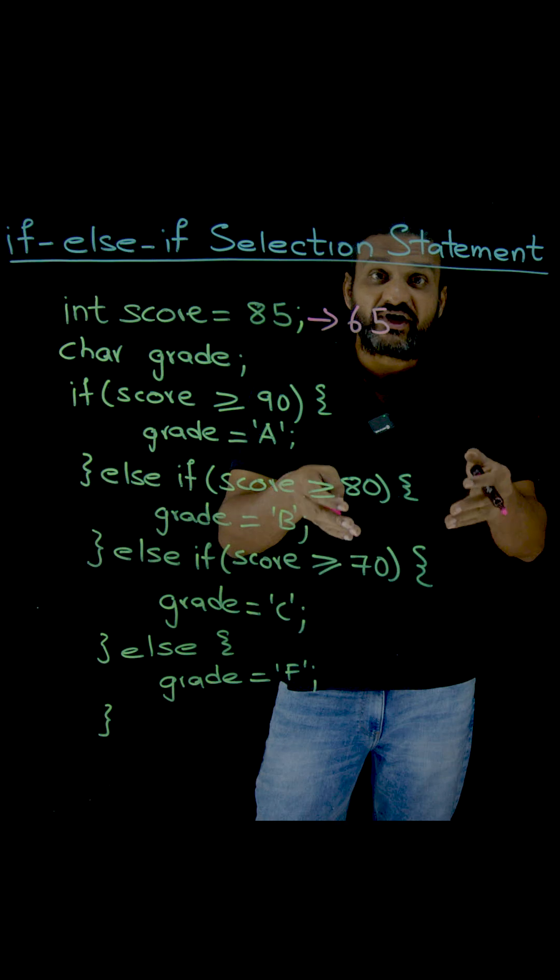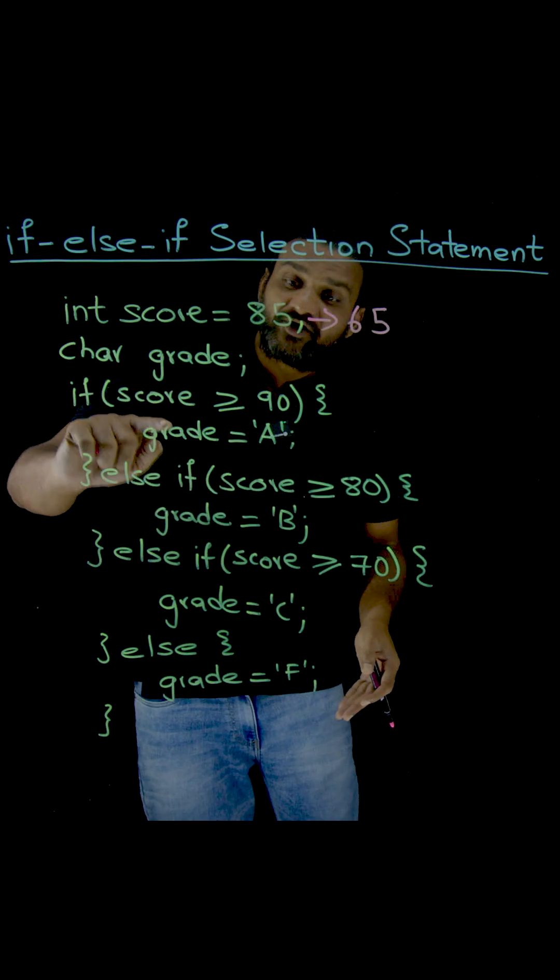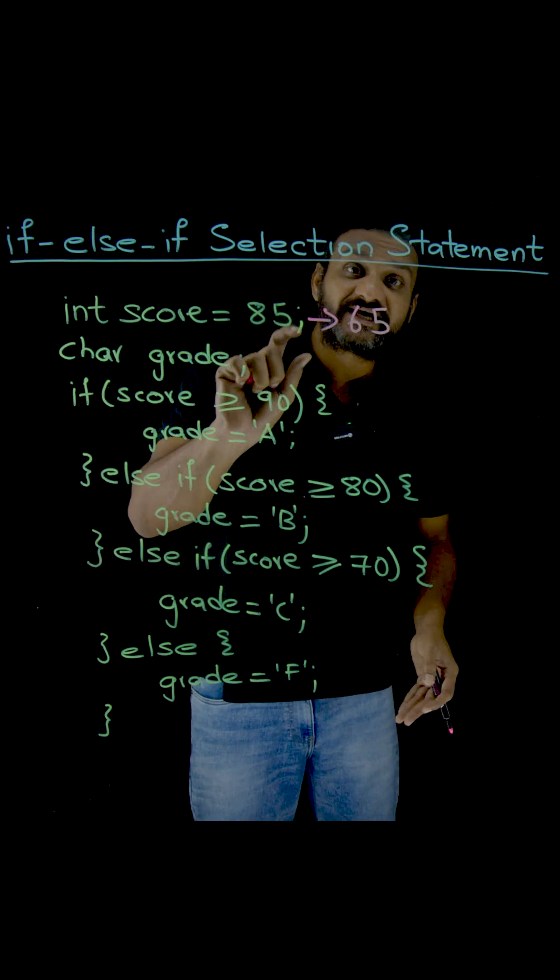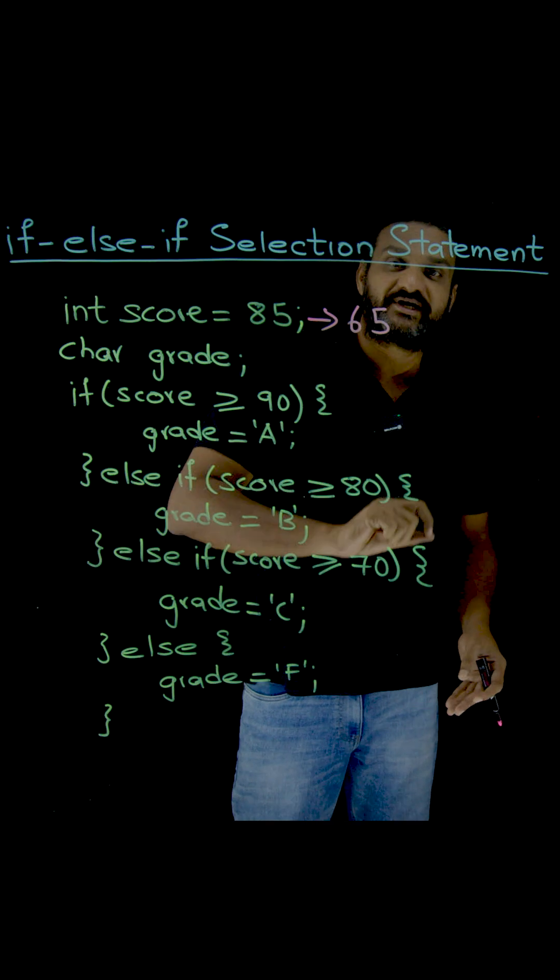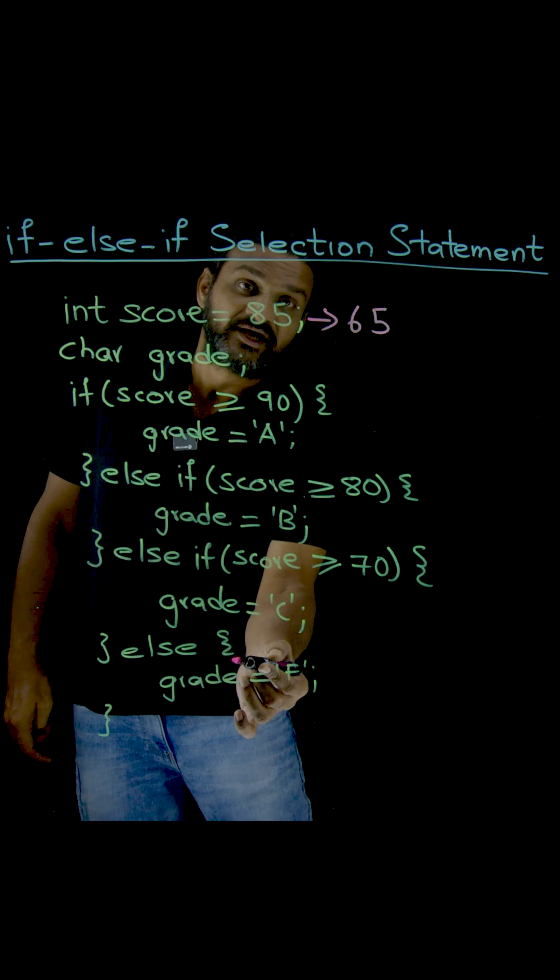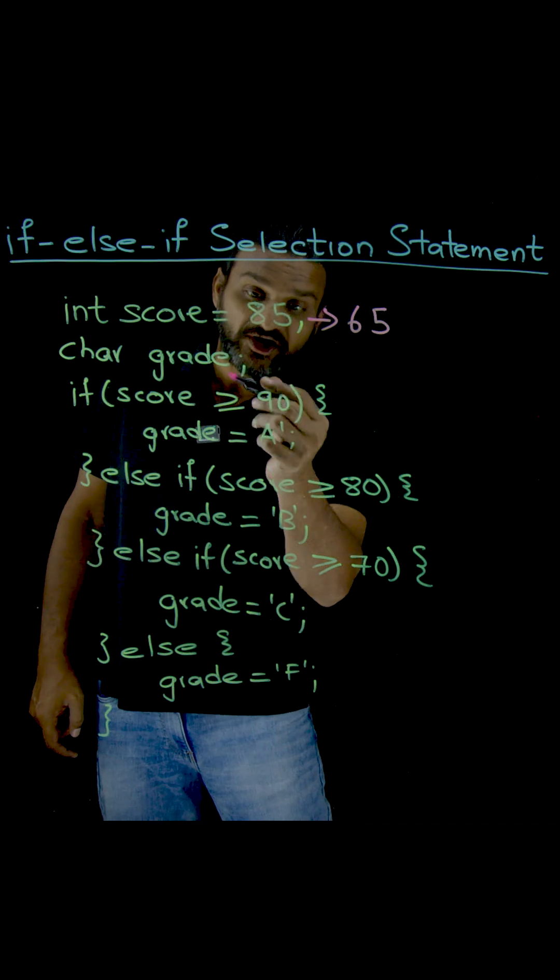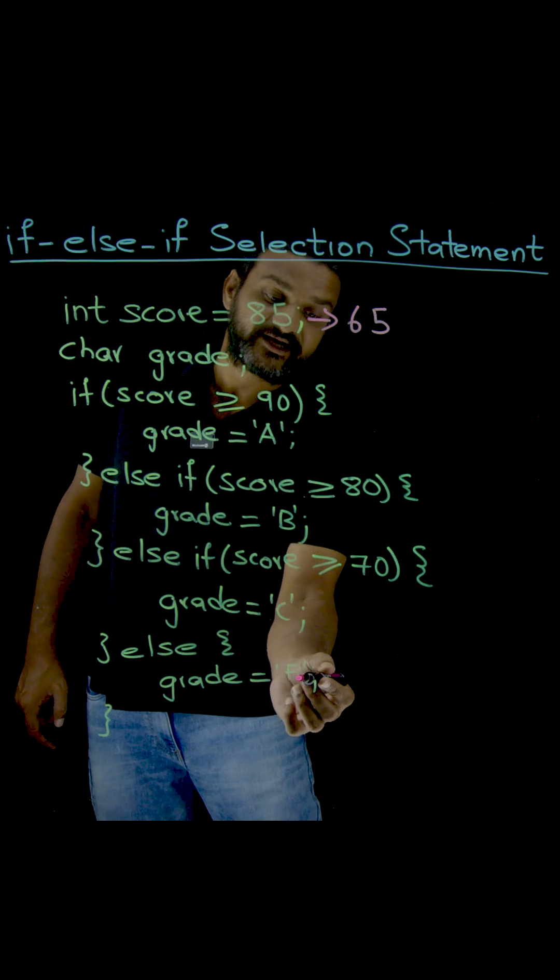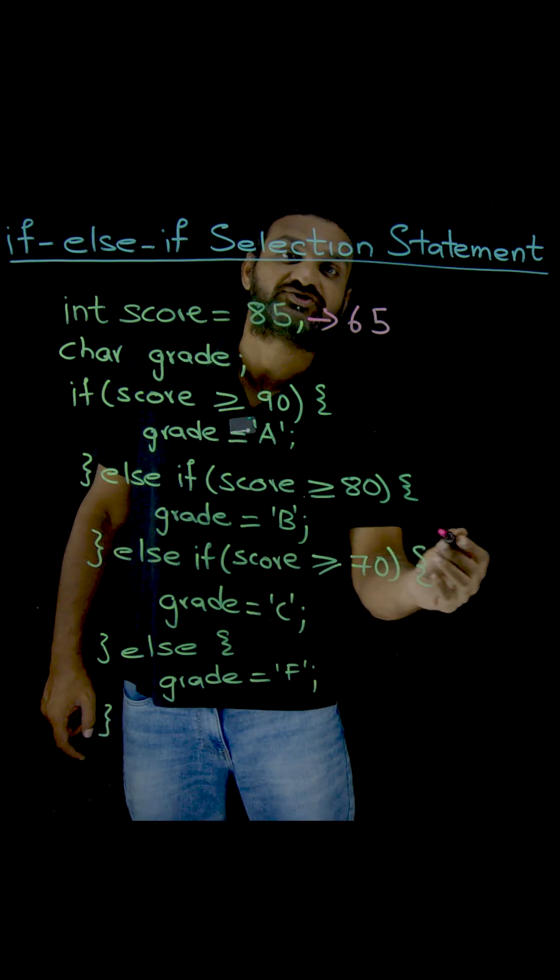But in our case, we are having an option where any of these options are not true, then we have to allocate a grade of F to the student. Now we come into this else statement, which is a default option. If none of these options are true, then we are going to allocate a grade of F to the student.